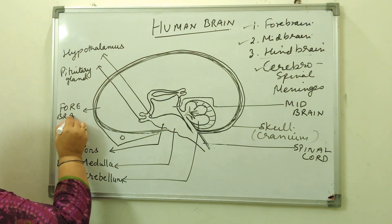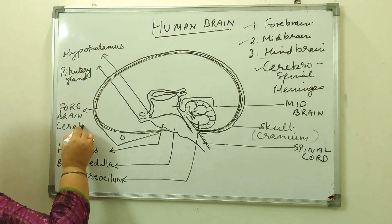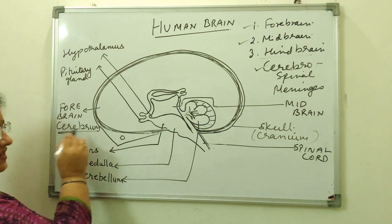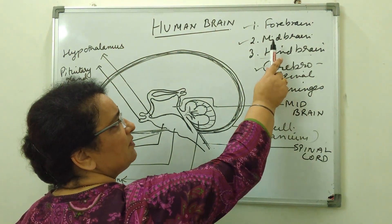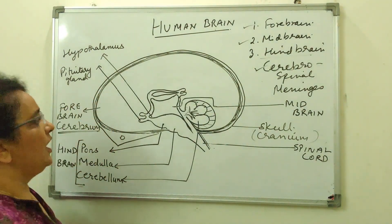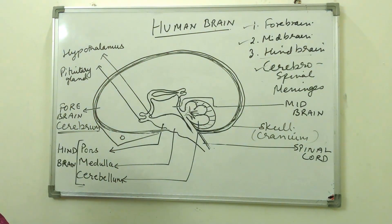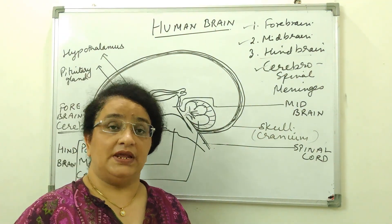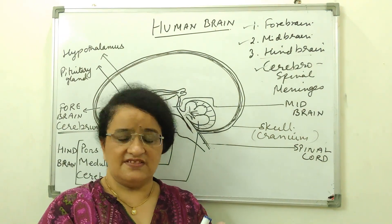This is forebrain and it is also known as cerebrum. So we have completed all three parts, hindbrain, midbrain, forebrain and now what are we left with? The folds present inside the forebrain. So this part of the forebrain, it consists of large number of folds.